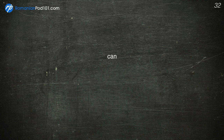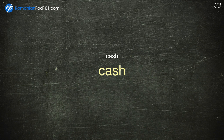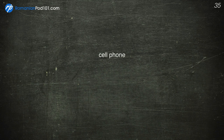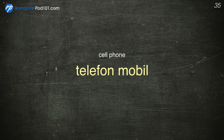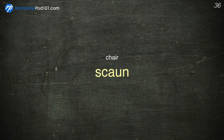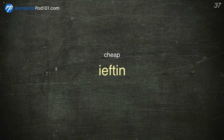Can — Poate. Cash — Numerar. Cat — Pisică. Cell phone — Telefon mobil. Chair — Scaun. Cheap — Ieftin.